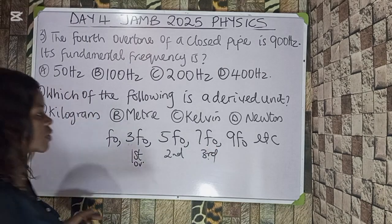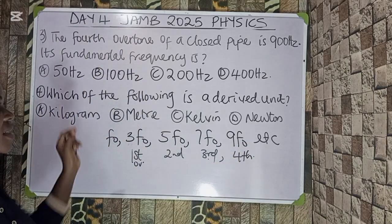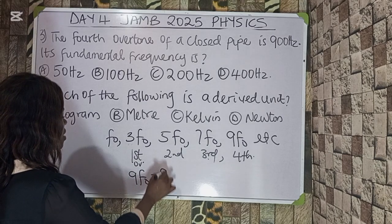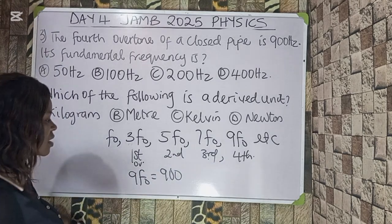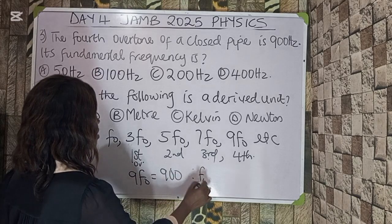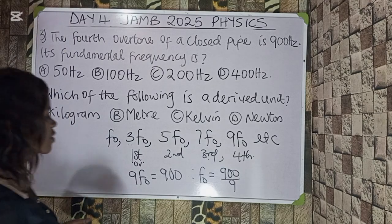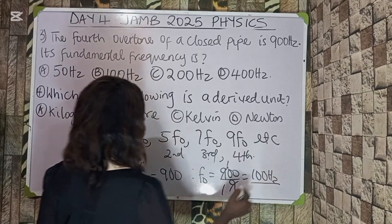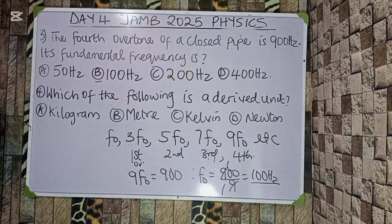The fourth overtone corresponds to 9f₀. So 9f₀ = 900 Hz. Dividing both sides by 9: fundamental frequency f₀ = 900 / 9 = 100 Hz. The correct option is B.